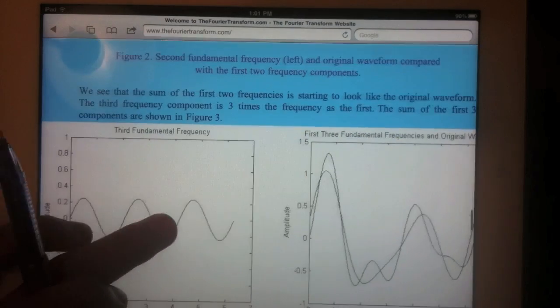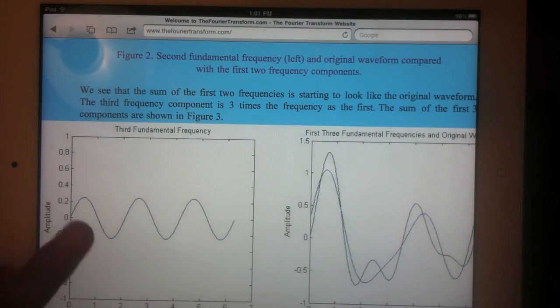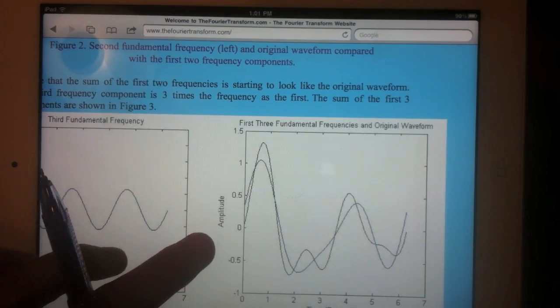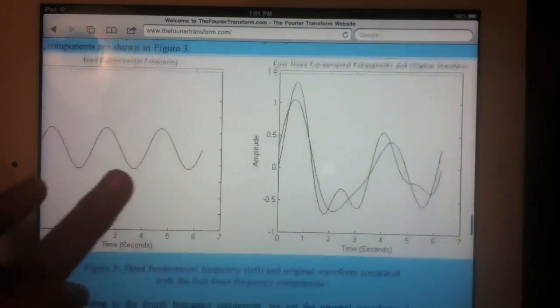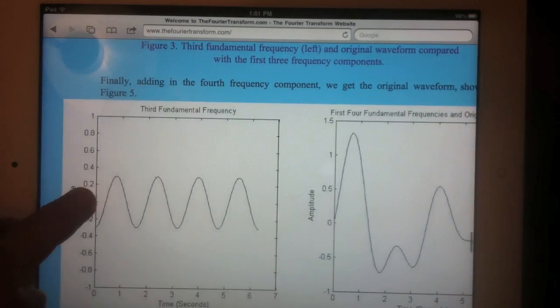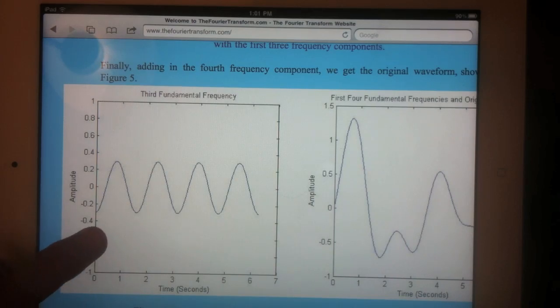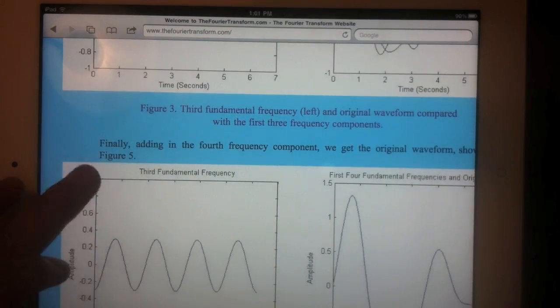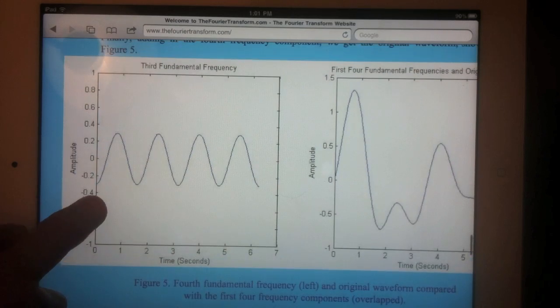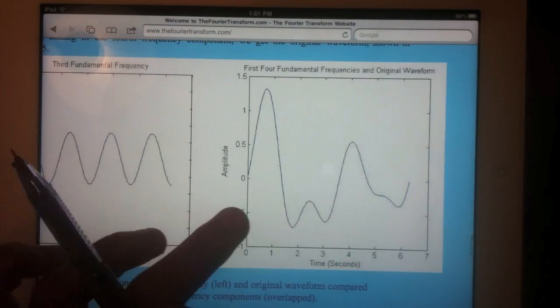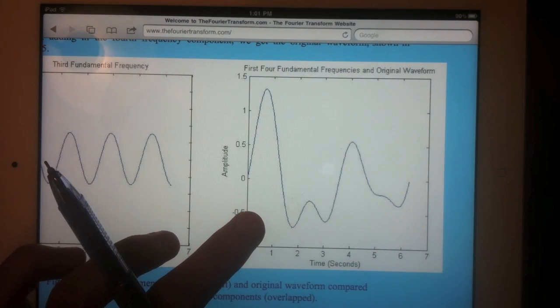So going farther, take a look at the, find a third frequency, which is smaller sine here. We add the first three components together and we see it starts to get very close. The fourth fundamental frequency is here. So we see the frequency of these building blocks is increasing. And by the time we add the fourth one in here, we end up with exactly the original waveform.